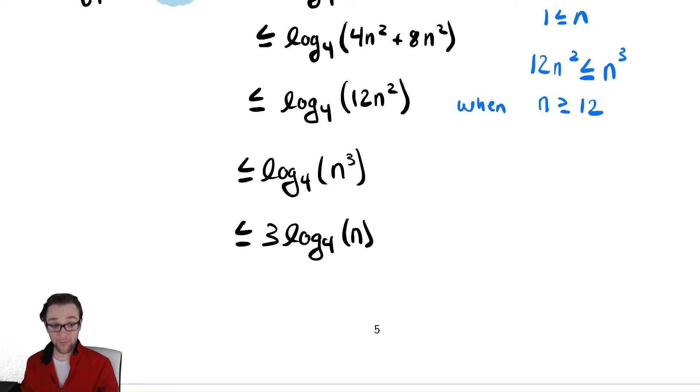So, just like before, the original expression is bounded above by a constant times our given function, log base 4 of n. And again, if we want to comment on what c and n naught are, we have c is equal to 3, and in this case n naught is different, it's 12.